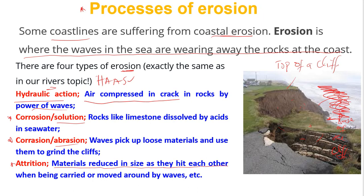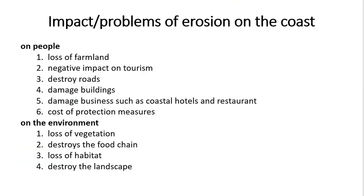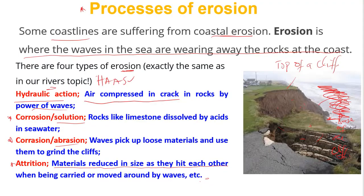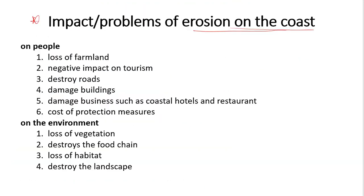Now, what is the impact of erosion at the coast? As you can see from this image, roads and vegetation are destroyed. The problems associated with coastal erosion on people include: loss of farmland, negative impact on tourism, destruction of roads, damage to buildings, damage to businesses such as coastal hotels and restaurants, and costly protection measures. On the environment, coastal erosion leads to loss of vegetation, destruction of the food chain, loss of habitat, and destruction of the landscape.